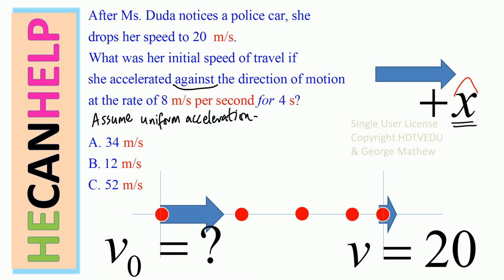A: Is it 34 meters per second? B: 12 meters per second? C: 52 meters per second?